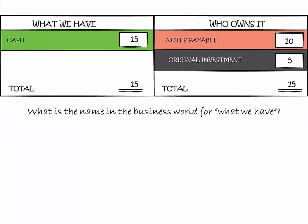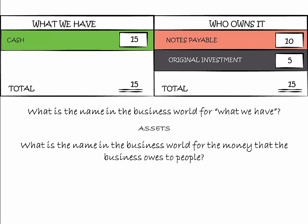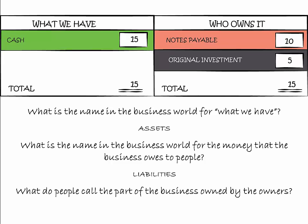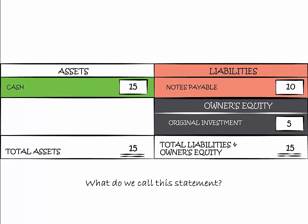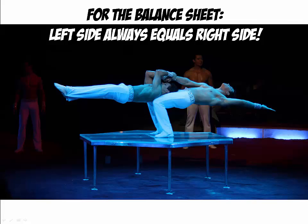What is the name in the business world for what we have? Assets. What is the name in the business world for the money that the business owes to people? Liabilities. What do people call the part of the business owned by the owners? Owner's equity. What do we call this statement? The balance sheet. A balance sheet is only accurate if the left side of the balance sheet is equal to the right side.